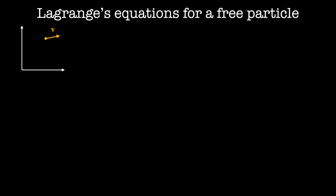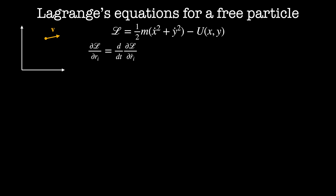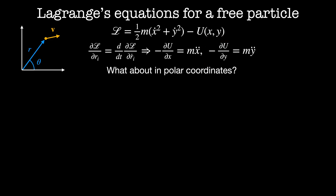For a first example, let's work out Lagrange's equations for a free particle in two dimensions. The particle travels at velocity v, and its Lagrangian is one half m times (x dot squared plus y dot squared) minus the potential energy as a function of x and y. This gives two Euler-Lagrange equations — one for x and one for y — telling us that the force in the x direction equals minus the derivative of the potential energy in x, with equivalent symmetric equations for y.